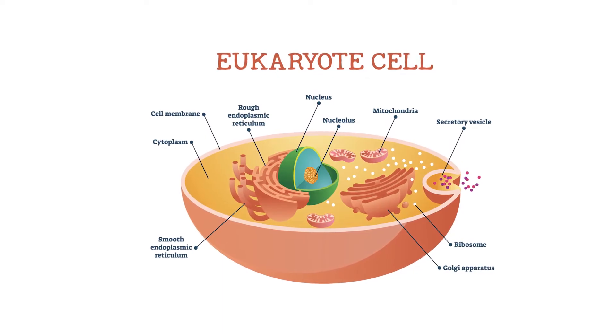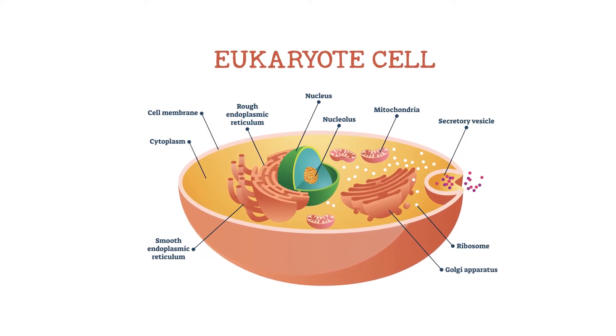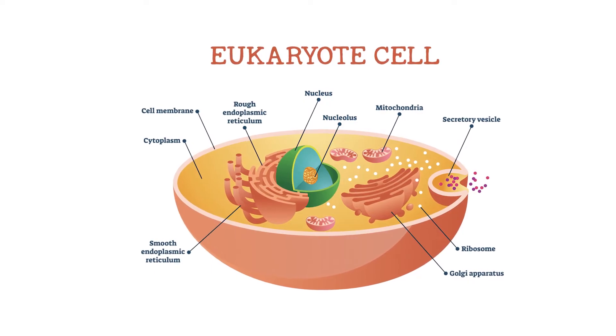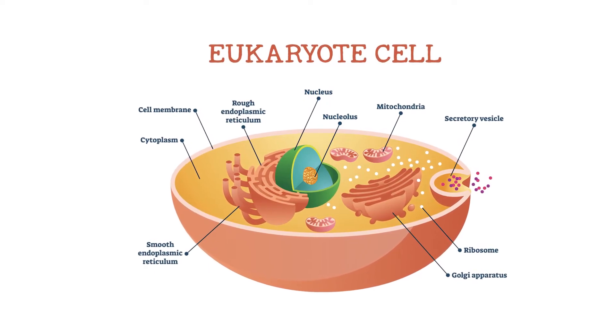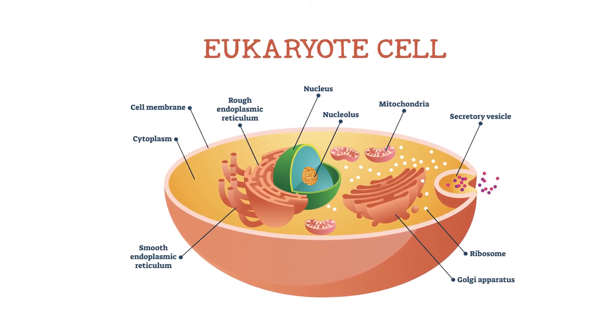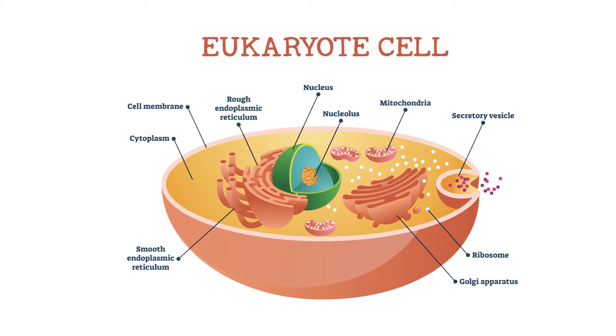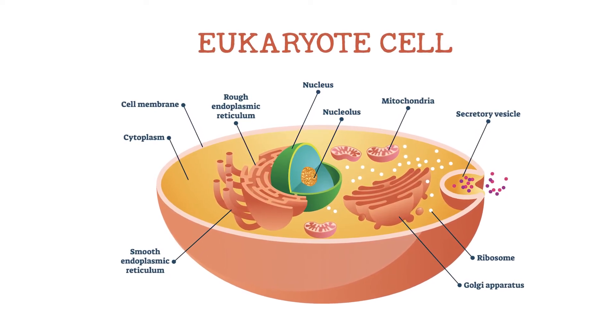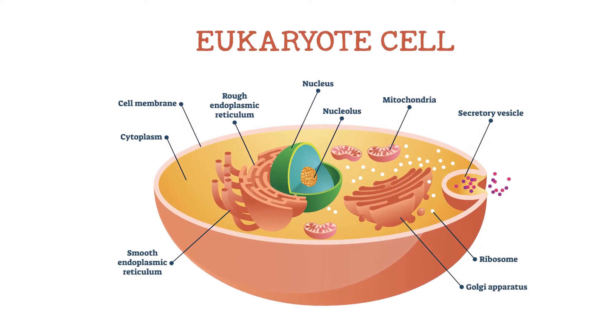An organelle is a membranous structure inside the cell that performs a specific job, and the most important organelle in a eukaryotic cell is the nucleus. The nucleus contains the genetic material for the cell and is the control center similar to a brain, directing the cell's activities and functions.